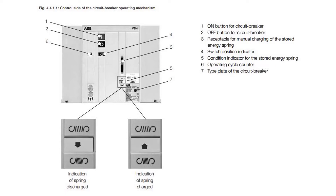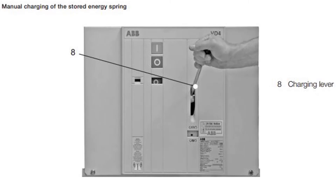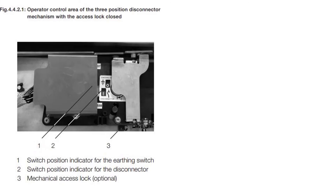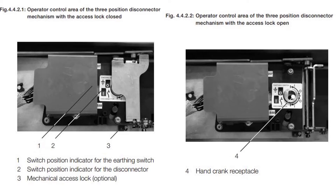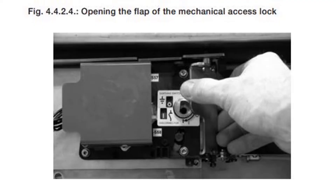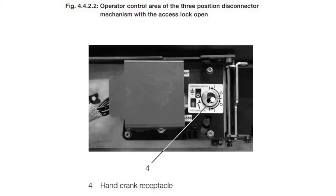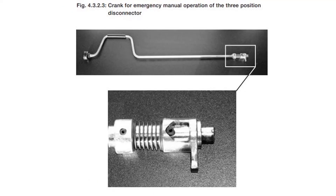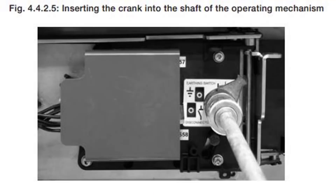Here are the different parts of the circuit breaker viewed from the front, including how to perform manual charging — you use a charging lever for manual charging of the stored energy spring. This is the operator control area of the three-position disconnector mechanism with access lock. The crank shown is for emergency manual operation of the three-position disconnector, which is inserted into the shaft of the operating mechanism.